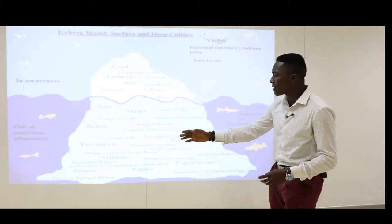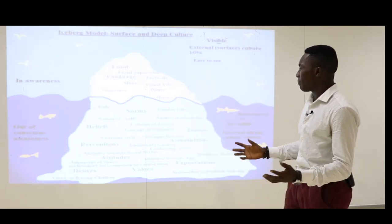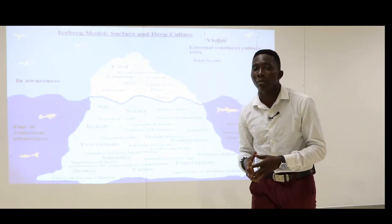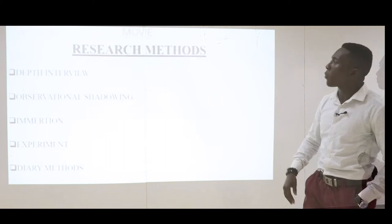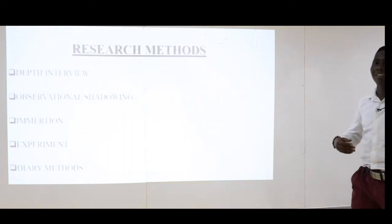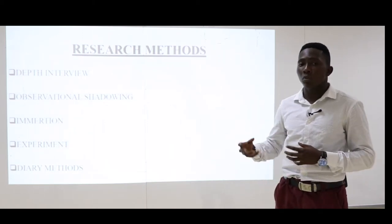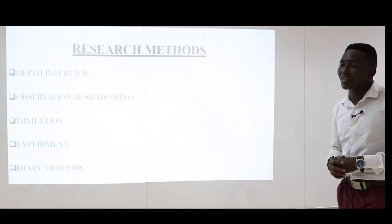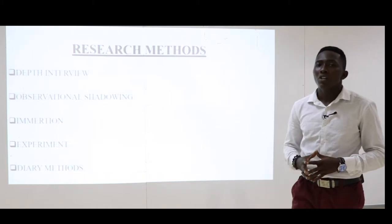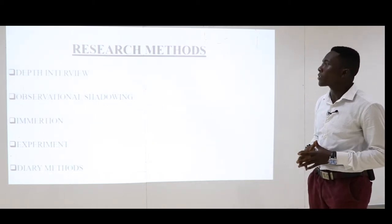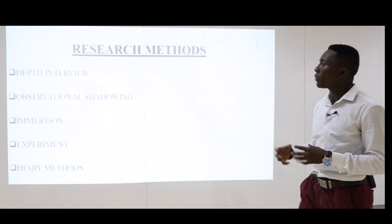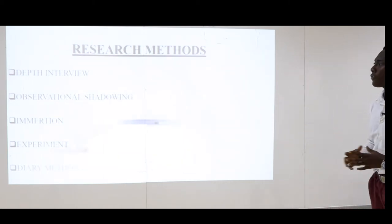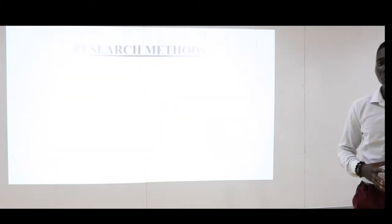When researching in a community you can learn about problems through physical aspects like food, literature, and visual arts. But ethnography reveals hidden figures — norms, belief systems, perceptions, and assumptions of people — that give a holistic view of the research problem. We have various disciplines of ethnographic research methods used to elucidate on the problem: depth interview, observational shadowing, immersion, experiment, and diary methods.